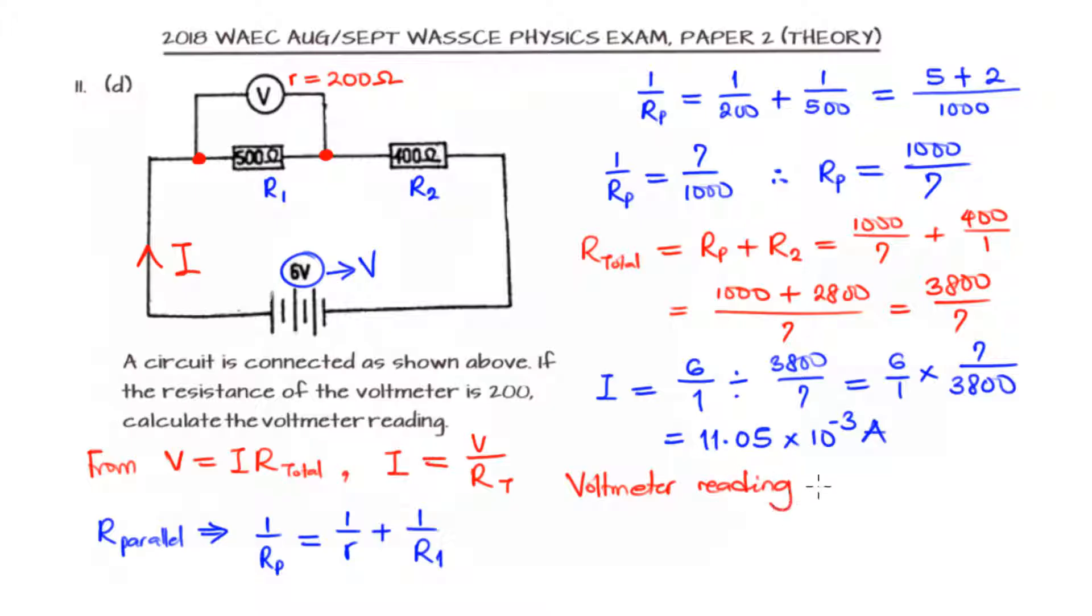So the voltmeter reading will be I multiplied by the R parallel. So that is going to be 11.05 exponent minus 3 multiplied by our parallel, which is 1000 over 7.